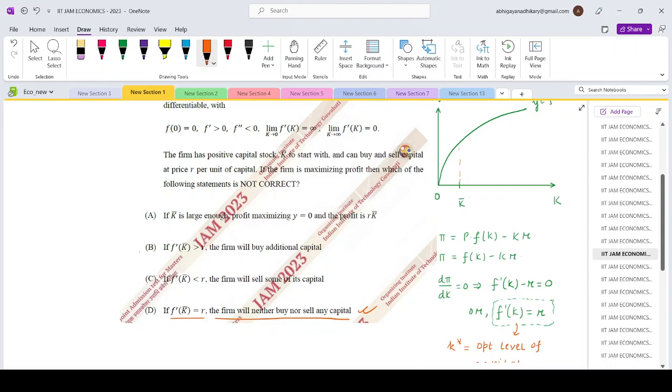Now if you look at option B, F prime K bar greater than R, the firm will buy additional capital. What is F prime K bar? It is the marginal productivity of capital.